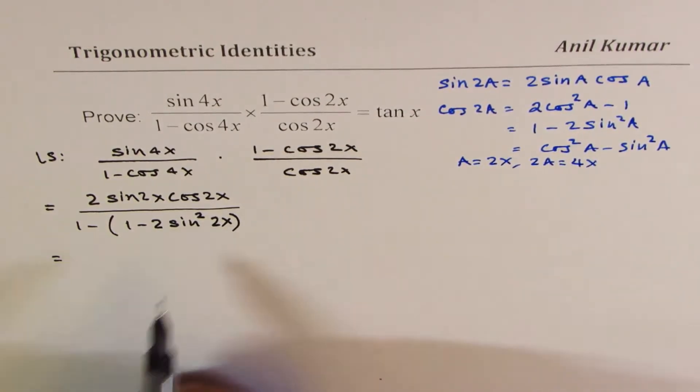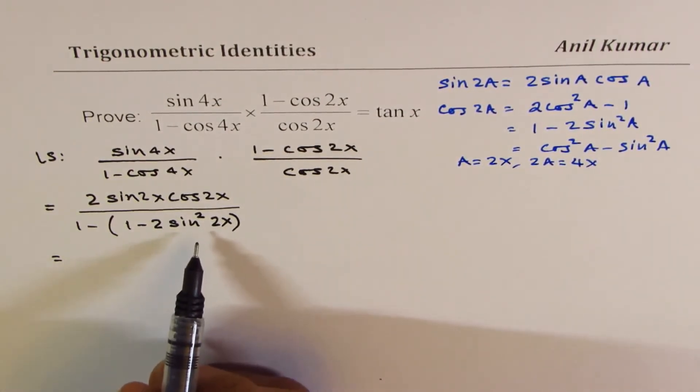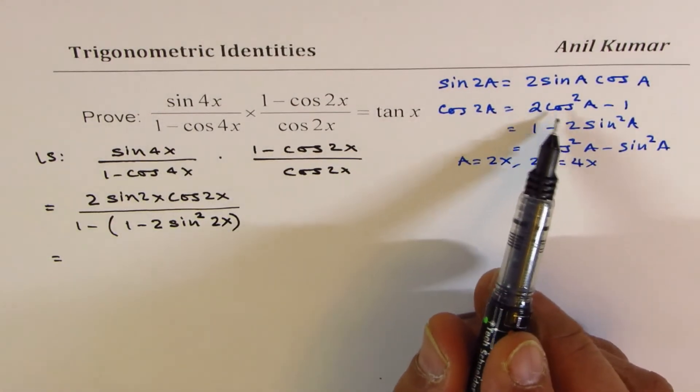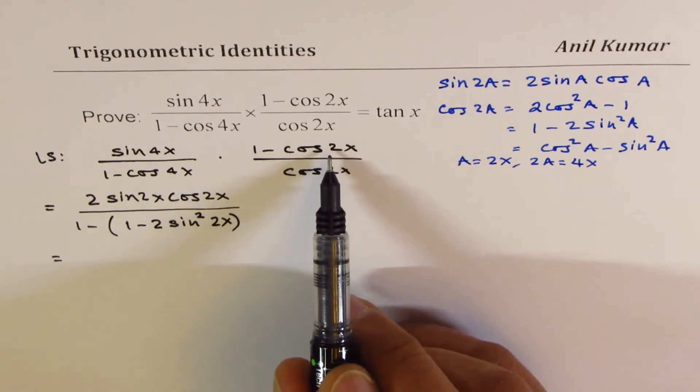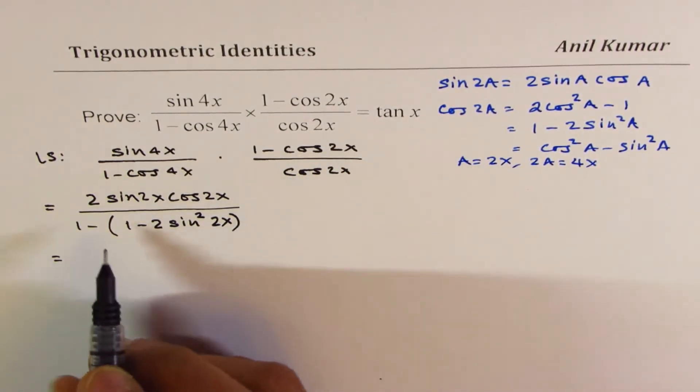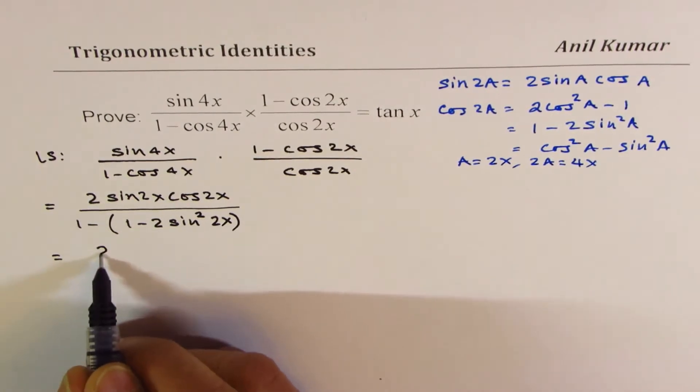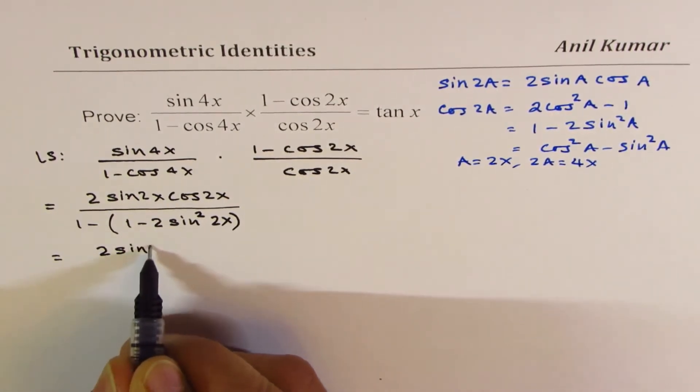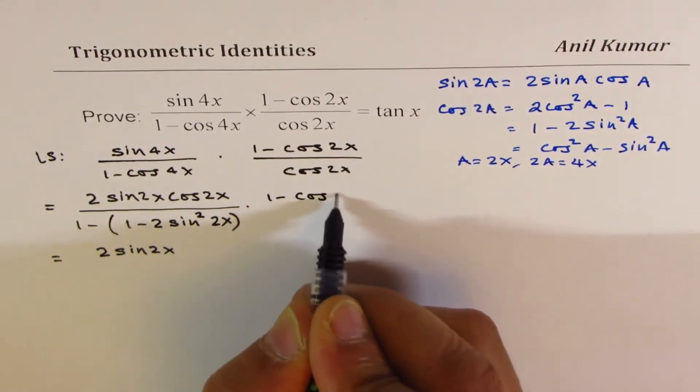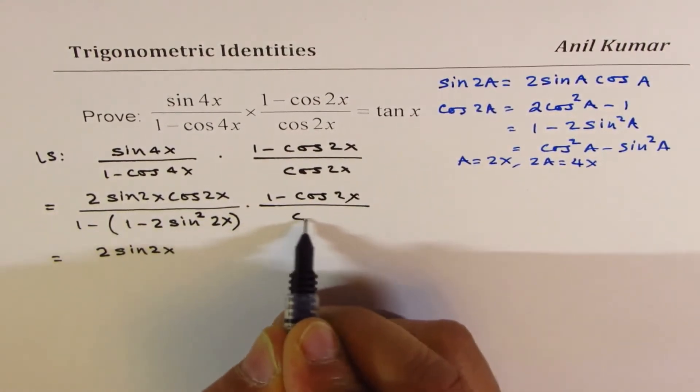So I get this 2 sine square a. The other thought could have been that I could have used 2 cos square a minus 1, cancelling out this numerator. So what we get here is 2 sine 2x. Let me complete this: 1 minus cos 2x over cos 2x.